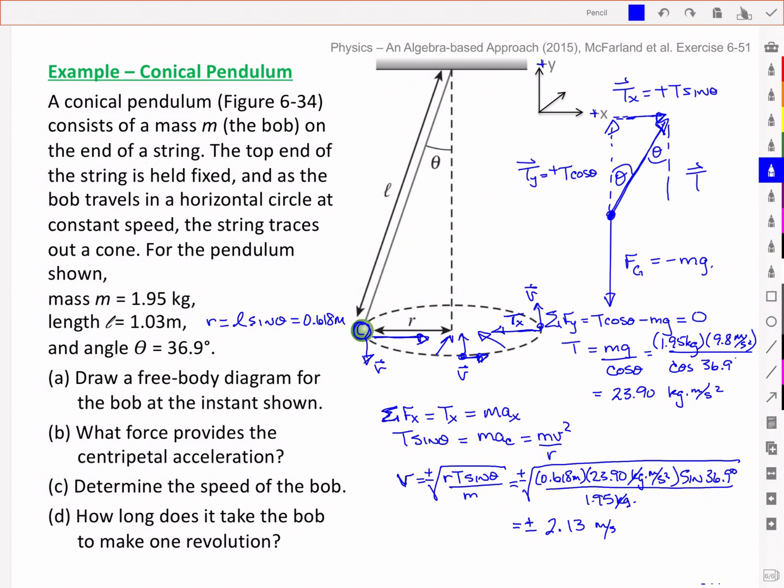And so lastly, it asks me, how long does it take the bob to make one revolution? Well, the velocity is just the circumference divided by the period of revolution. And so from that, I can solve for t to get a value of 1.82 seconds.